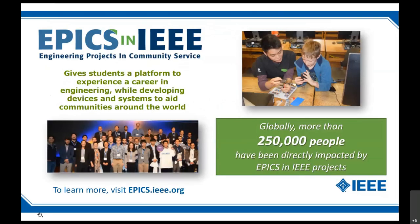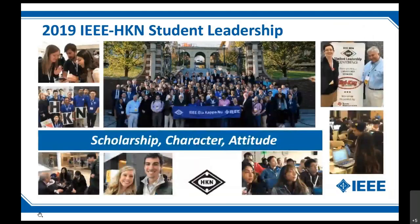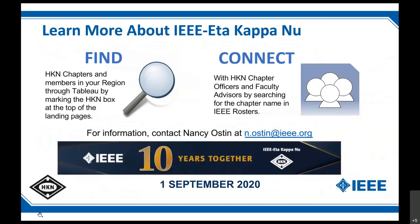EPICS in IEEE stands for Engineering Projects in Community Service. This is mainly a university-level activity, with some smaller K-12 effort. It provides students with the ability to work on projects that provide service to the community, and these are global — all around the world. IEEE Eta Kappa Nu is our IEEE Student Honor Society, with folks around the world engaged. Scholarship, character, and attitude are the motto.